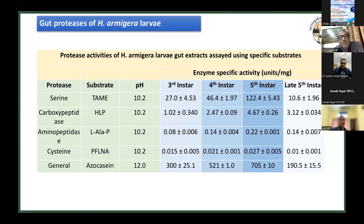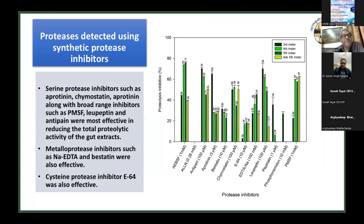Among all instars, serine protease levels are much higher than other protease types, though other proteases are also present. When submitting for publication, reviewers asked us to verify our findings by inhibiting specific proteases with synthetic chemical inhibitors and measuring what remained. Using synthetic inhibitors — PMSF and EDTA — and inhibiting specific protease types, the results confirmed our observations. The total proteases were most active at pH 12, and gut proteases were active across pH 3 to 13, consistent with the alkaline gut pH typical of lepidopteran insects.